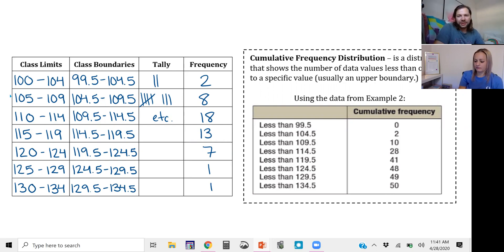A cumulative frequency distribution is just a distribution that shows the number of values that are less than or equal to a specific value, usually some upper bound.